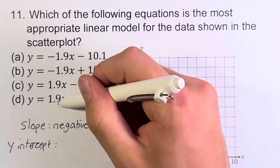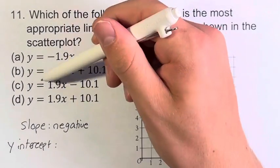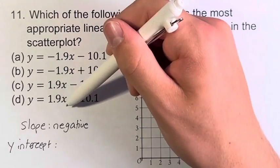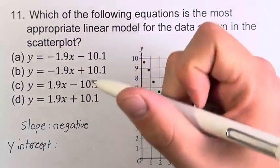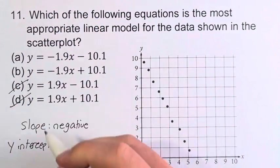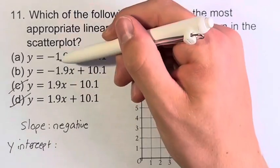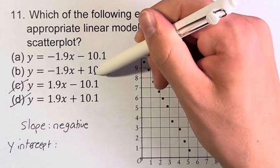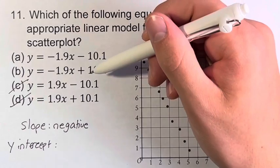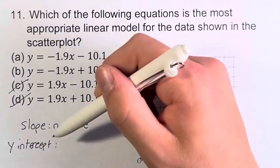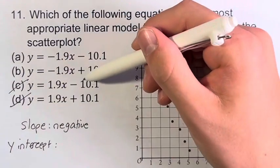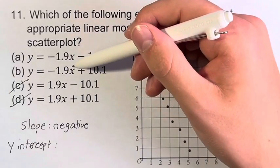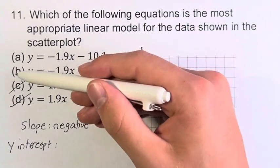And already we can eliminate C and D. The value of the slope in these equations is 1.9. It's positive. So we know that can't be our answer. And now we're between A and B, which both have negative slopes but different y-intercepts. Like I said, there's no combination that will fit two of these answers. So we have to find the y-intercept, and that will determine whether it's A or B.